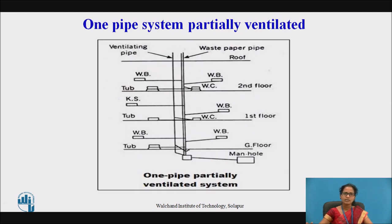The next type is the one pipe system, partially ventilated. This system is a combination of the one pipe system and the single stack system. Like the single stack system it has a single vertical pipe for collecting waste water, but a ventilating pipe is also provided to the side for ventilating the outlets of the WCs and urinals. All the traps of WCs, wash basins, baths, and kitchen sinks are connected to this vertical pipe, which is then connected to the manhole. The cost of this system is reduced as it uses a ventilating pipe.